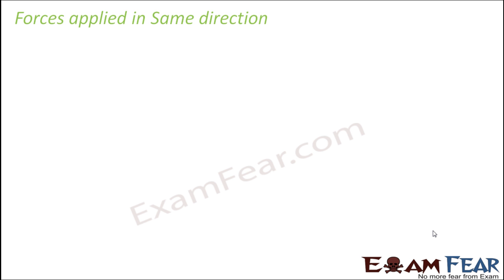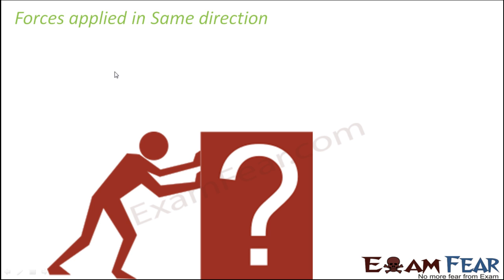What will happen if multiple forces are applied on a body in the same direction? Let us suppose you have a huge box and person A is applying a force F1 of 10 Newtons — 10 is the magnitude and Newton is the unit in which force is measured. Just as we use kg to measure mass, like when you buy 10 kg of potatoes, or liters when you buy milk, similarly when we talk about force, we talk in terms of Newton.